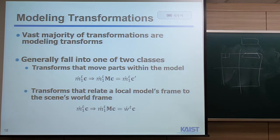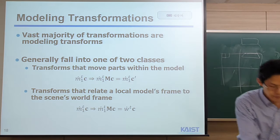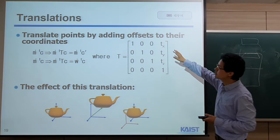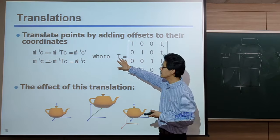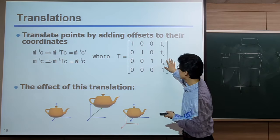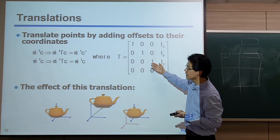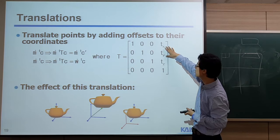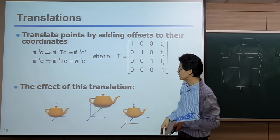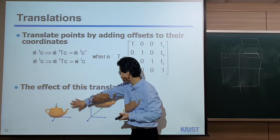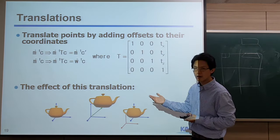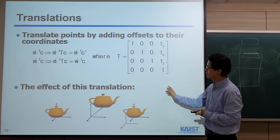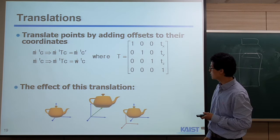3D translation: the rotation part of the matrix is the identity matrix, and only tx, ty, tz — the translation amounts along x, y, z — are set. Given modeling coordinates, we translate the object in that direction. Alternatively, we change the frame. These are two equivalent interpretations.